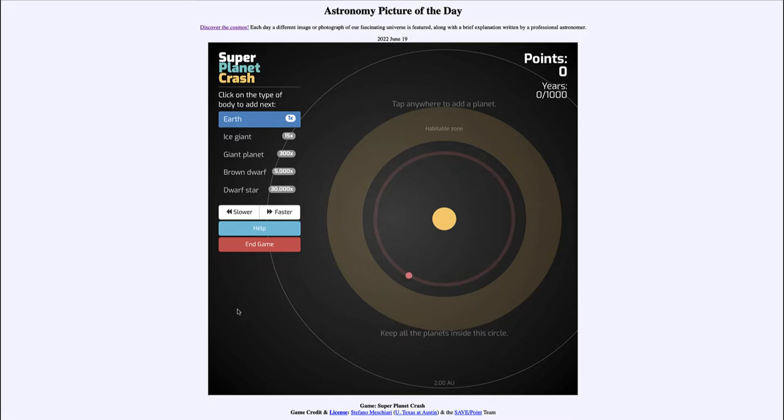well, it is titled Game Super Planet Crash. So what do we see here? Well, it is a game that you can play to try to build a solar system and to put various objects in it.